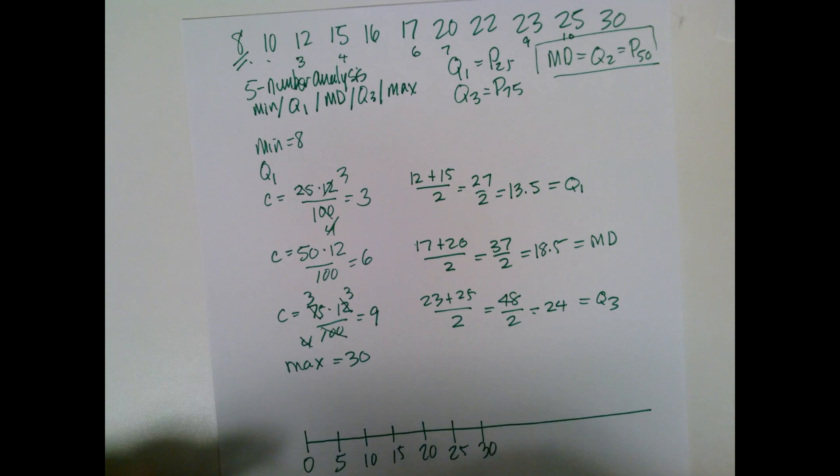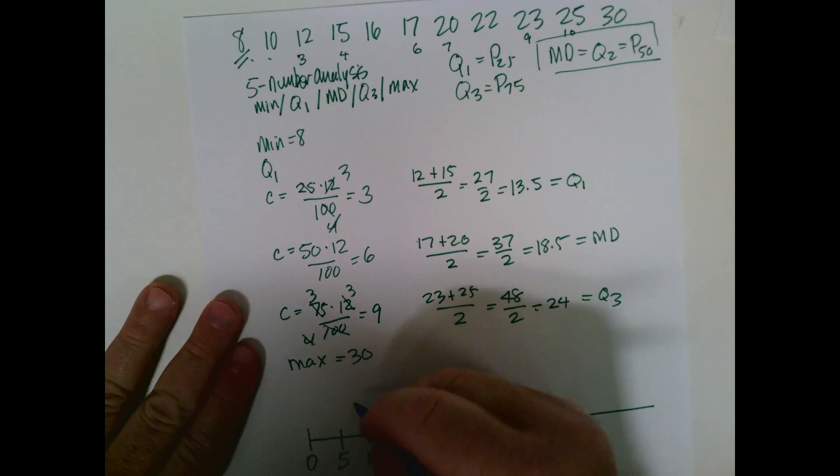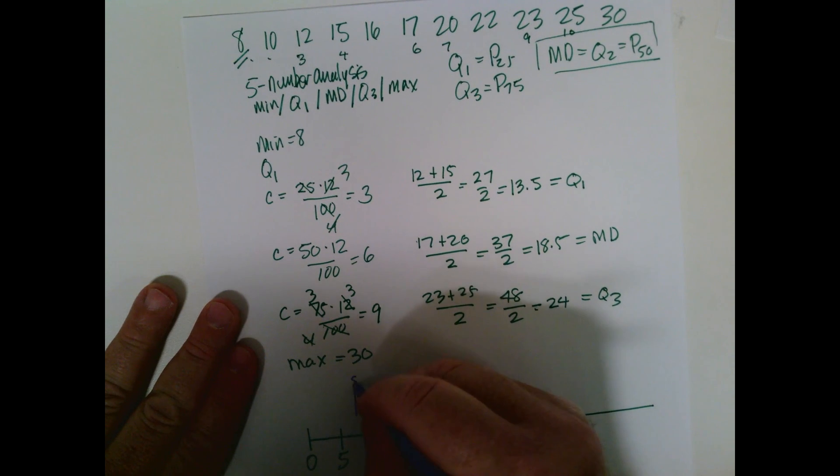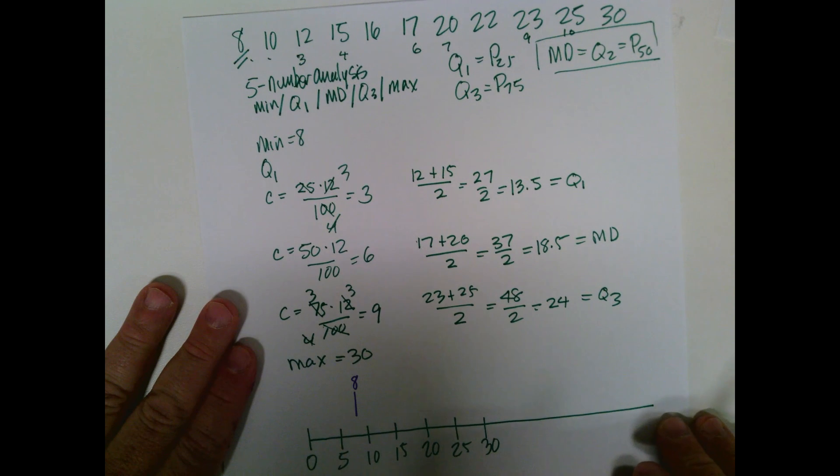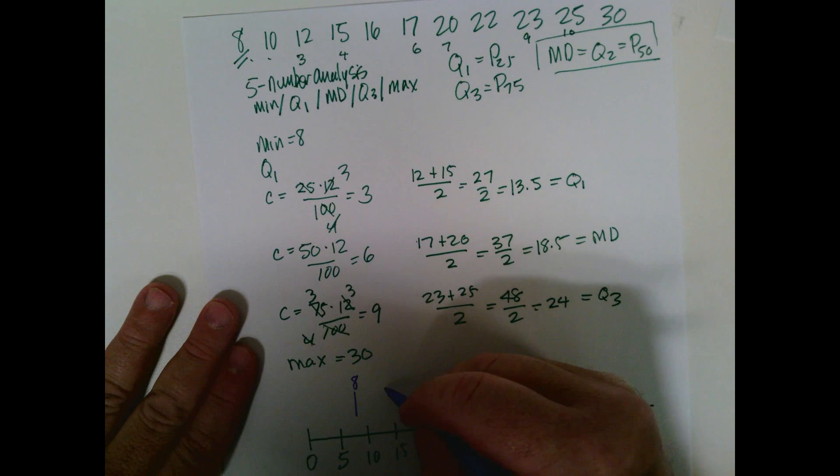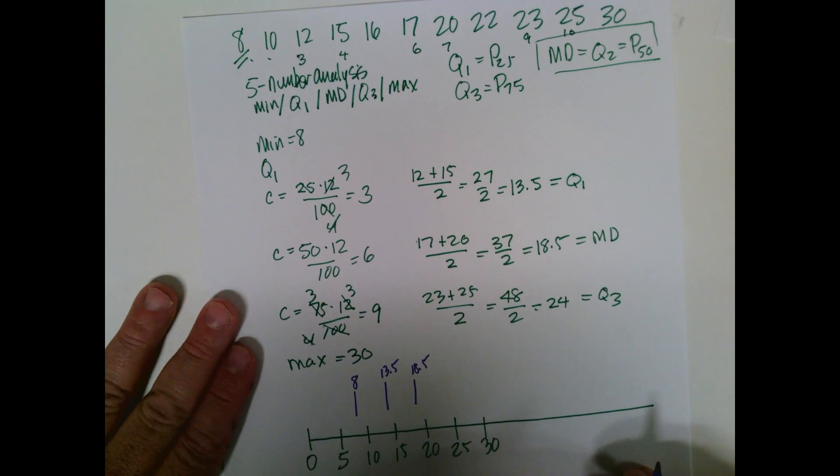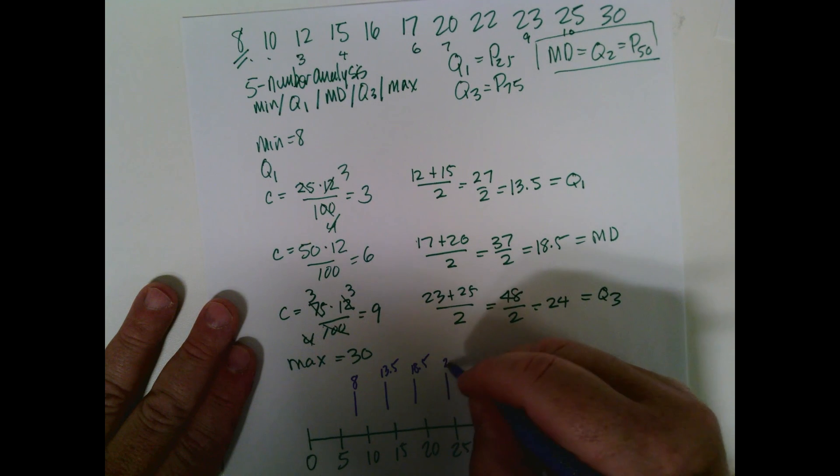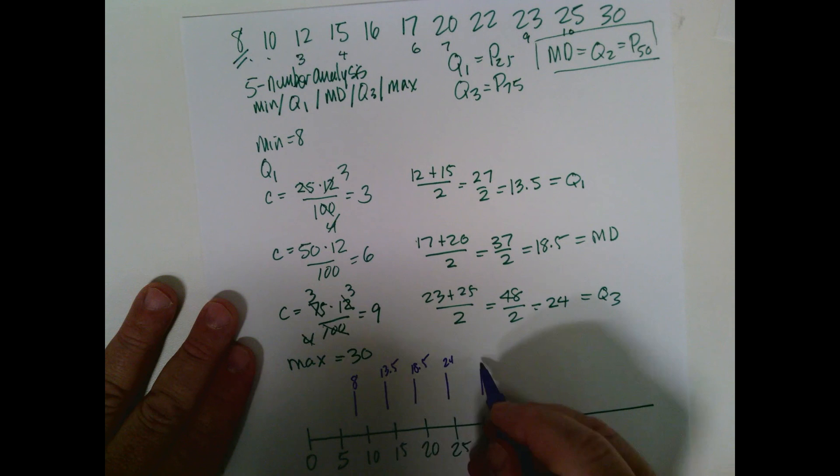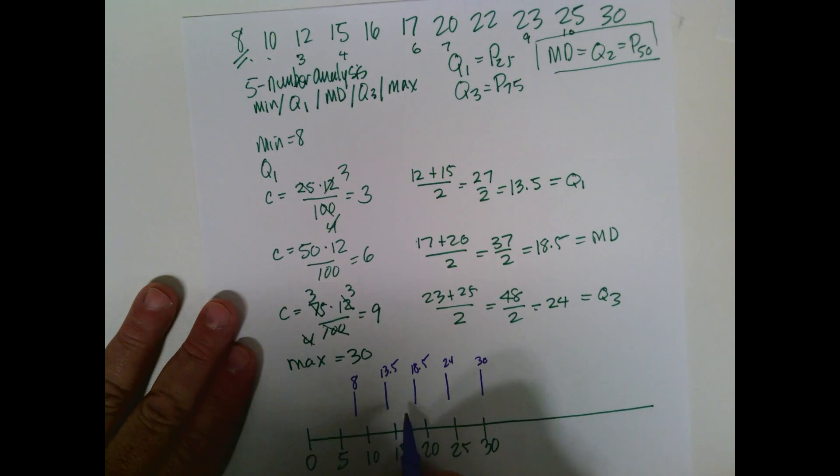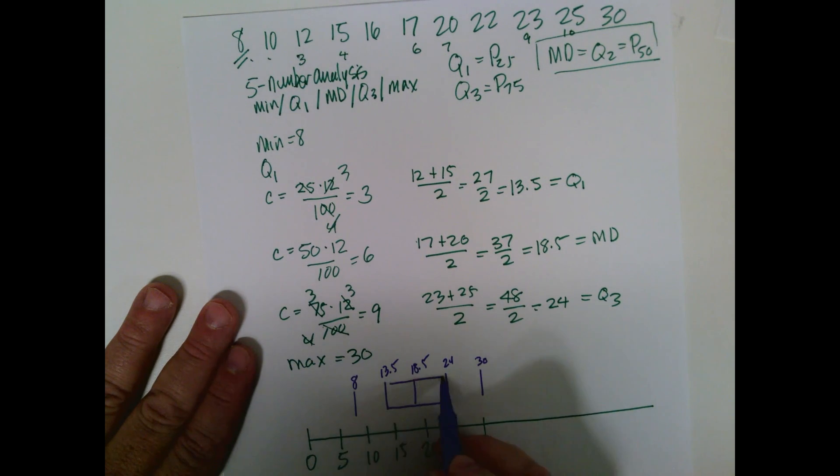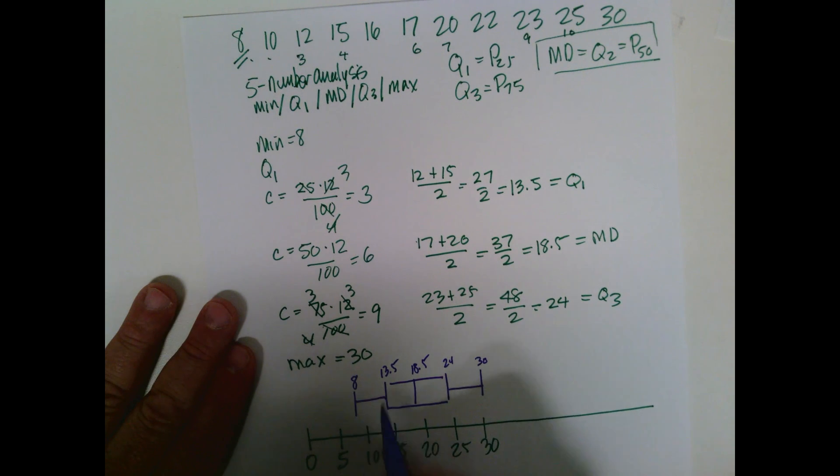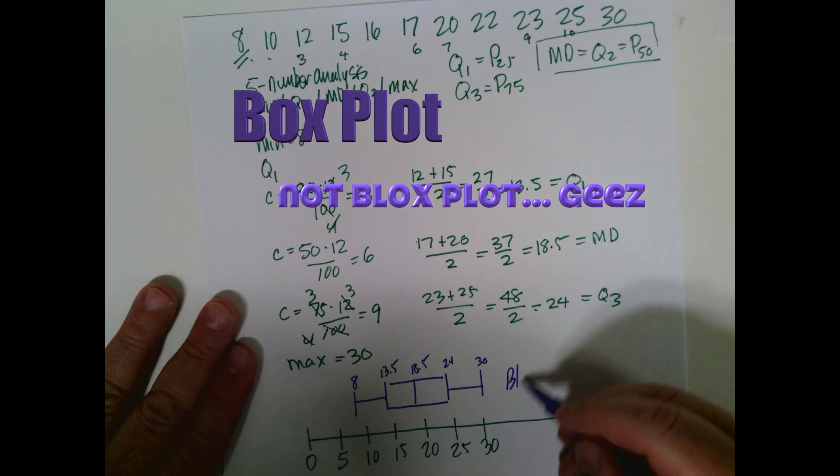All right, so now we're gonna put a little line above our scale where each one of these are. So we have 8. I'll label it. And then the next one is 13.5. So that would be right here. The next one is 18.5, which let's say that's about there. And then we'll have 24, which is here, and then 30, which is there in the max. Now we connect the middle three, and we connect the ends, and we have our box plot.